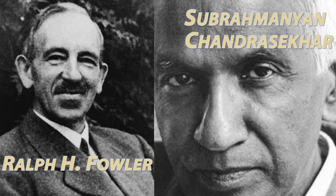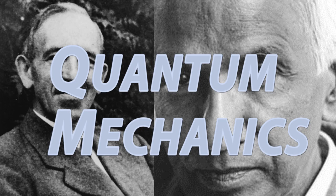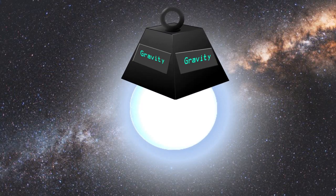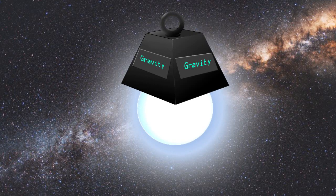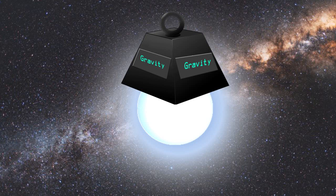R.H. Fowler and S. Chandrasekhar came along. They used quantum mechanics to solve this problem. As gravity tries to compress white dwarfs further, electrons inside the star resist this compression. How? Let's find out.